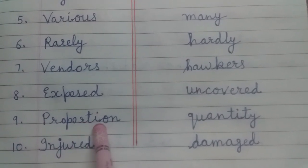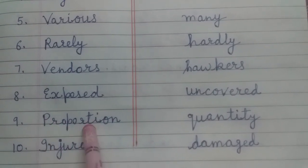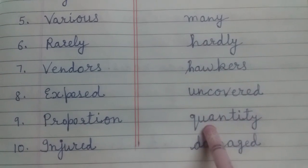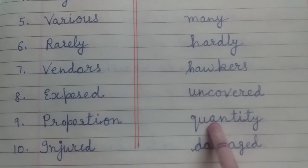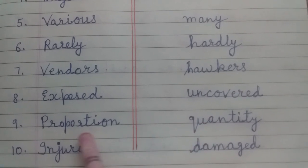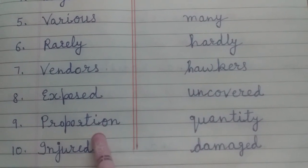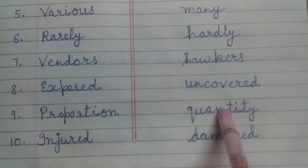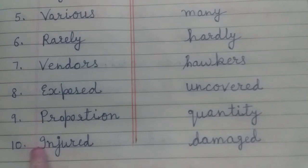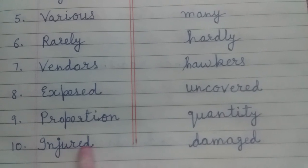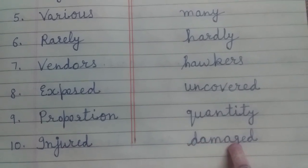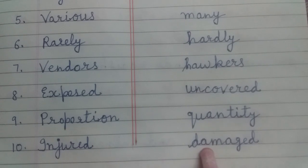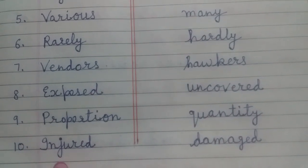Dirt होती है, germs हो जाते हैं, जिससे खाकर आप बीमार पड़ सकते हो। इसलिए आपको uncovered या exposed food नहीं खाना चाहिए। Exposed का meaning क्या हुआ? Uncovered. Ninth word: proportion — P-R-O-P-O-R-T-I-O-N — proportion. Meaning: quantity — Q-U-A-N-T-I-T-Y — quantity. Proportion meaning: quantity. Tenth word: injured — I-N-J-U-R-E-D — injured. Meaning: damaged — D-A-M-A-G-E-D — damaged. Injured means damaged, मतलब कोई चीज नष्ट होना, घायल होना। इसका meaning hurted भी हो सकता है।